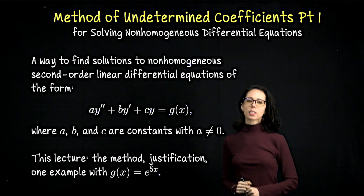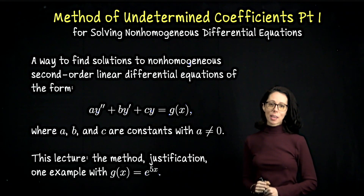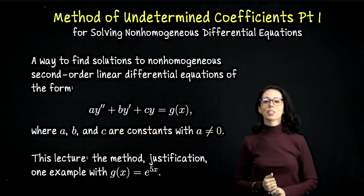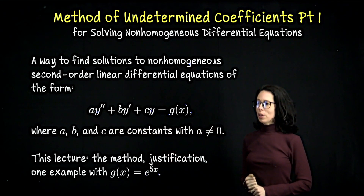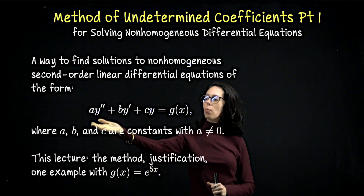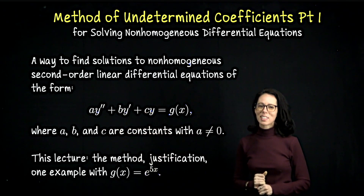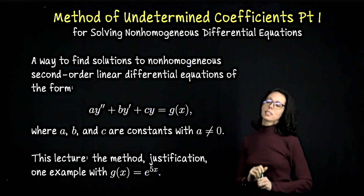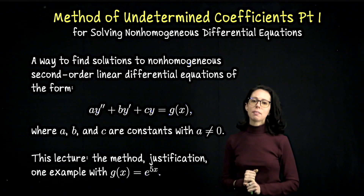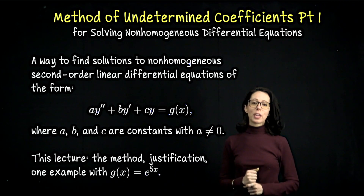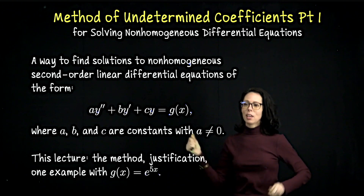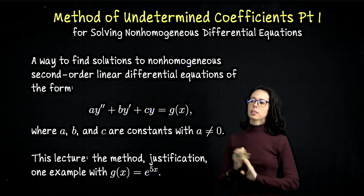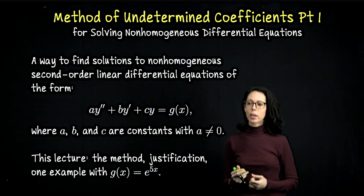Hi, everyone. This video and the next few videos are going to contain examples of using the method of undetermined coefficients to solve second-order differential equations. On the left-hand side we have a y double prime plus b y prime plus c y, the same type of left-hand side we've seen recently. But on the right, we now have a function of the independent variable, g of x. The existence of this g of x expression on the right-hand side turns our equation into a non-homogeneous differential equation.